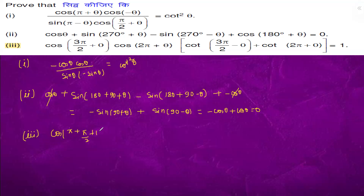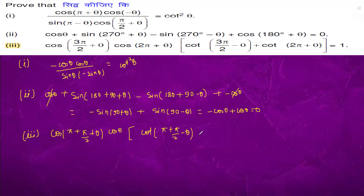cos(π/2 + θ): cos(2π + θ) is cos θ. For cot(3π - θ): it is cot(π + π/2 - θ), plus cot(2π + θ) is cot θ.